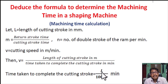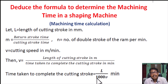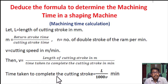Since L is in millimeters, we convert it by dividing by 1,000. So, time taken to complete the cutting stroke equals L divided by 1,000 into V minutes.